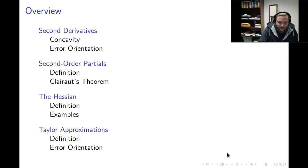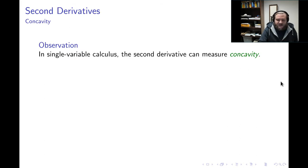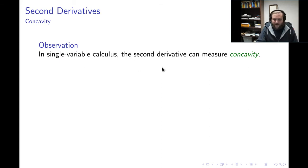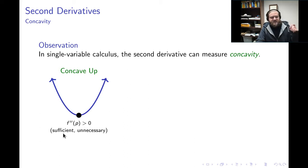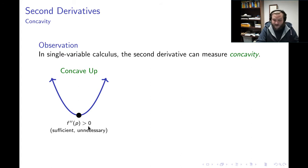In order to discuss the Hessian, we have to discuss second derivatives. Let's do a quick Calc 1 review. In single variable calculus, the second derivative can measure concavity. If you're concave up, one way this could happen is if your second derivative is greater than zero. Remember, this is a sufficient condition but not necessary — you could have a zero second derivative and be concave up. But if you know your second derivative is positive, that means your function is concave up.